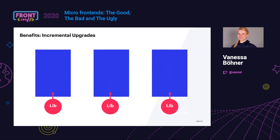One benefit of micro frontends is that each one can independently manage its libraries. For us it's Vue. Upgrading your whole codebase to a new version — like Vue 3 coming out — is something many people are afraid of. With a monolith you'd need a code freeze, which you can't tell your project owner. But with micro frontends you can upgrade one at a time. Yes, this might mean two Vue versions are loaded in the browser, but we're talking about trade-offs — it's better to upgrade over two months than not upgrade at all.